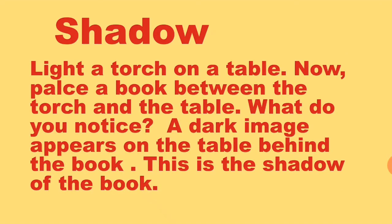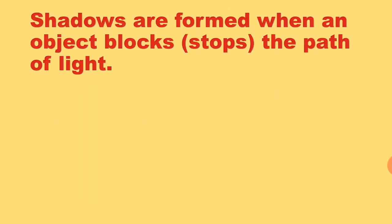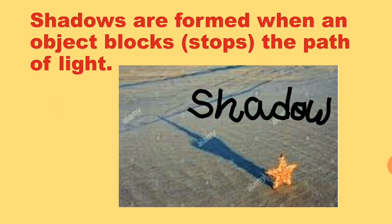Shadow. Light a torch on a table. Now place a book between the torch and the table. What do you notice? A dark image appears on the table behind the book. This is the shadow of the book. Shadows are formed when an object blocks the path of light. This is shadow.